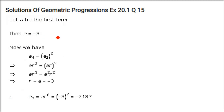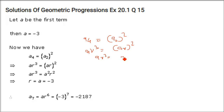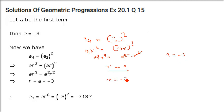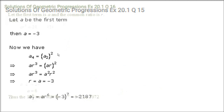Next NCERT problem: the 4th term of a GP is the square of its 2nd term, and the first term A = −3. Find the 7th term. A4 = (A2)², so AR^3 = (AR)² = A²R². Cancelling A gives R = A = −3. The 7th term A7 = A·R^6 = −3·(−3)^6 = −2187.